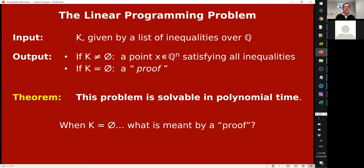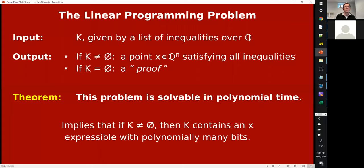The fact that this problem is solvable—the fact that when K is not empty you can find a point x in polynomial time—one interesting thing that implies is that a solution, if it exists, can be written down with polynomially many bits. That's actually not obvious, so that's interesting. We'll get into that.